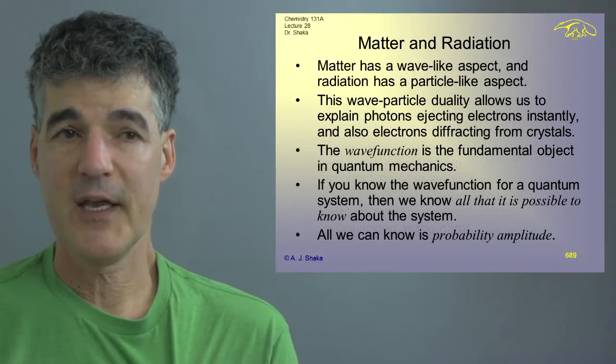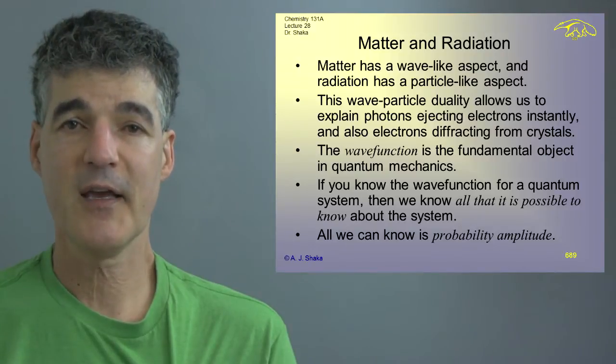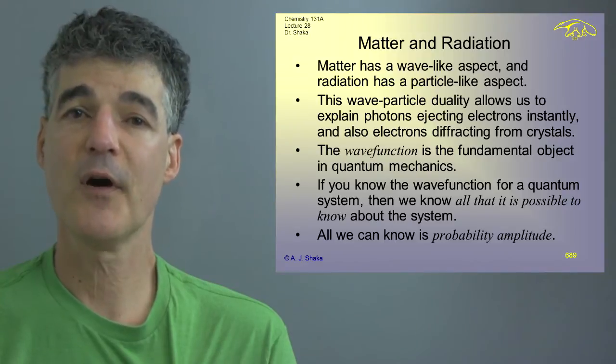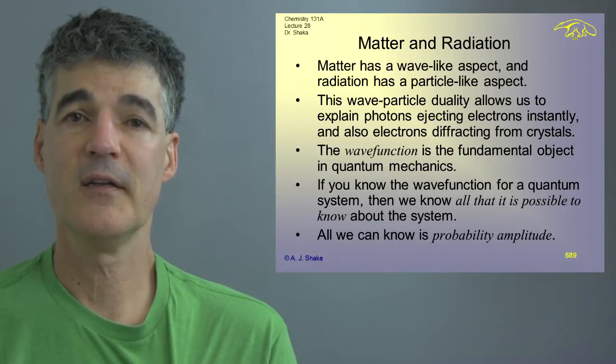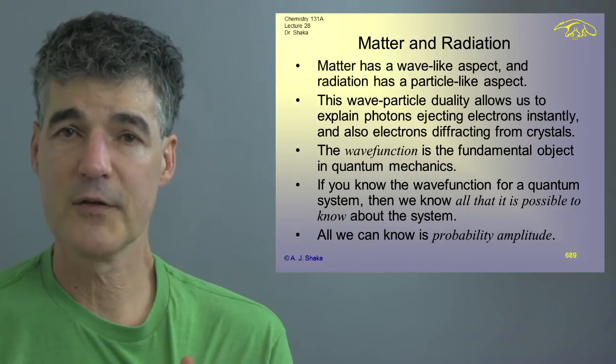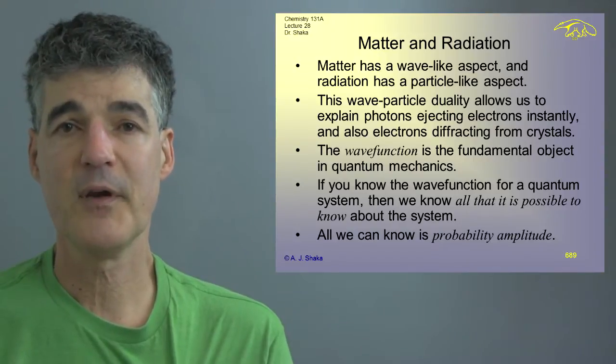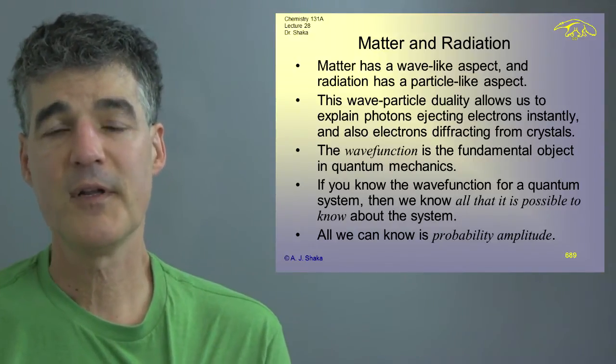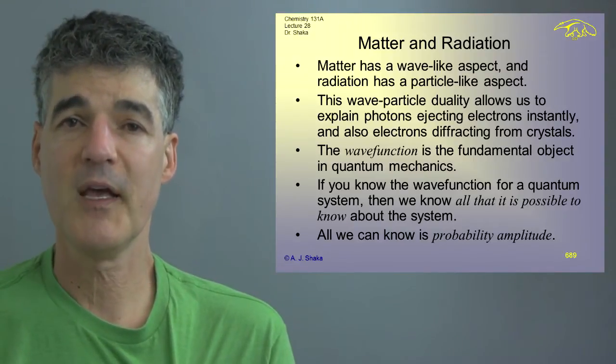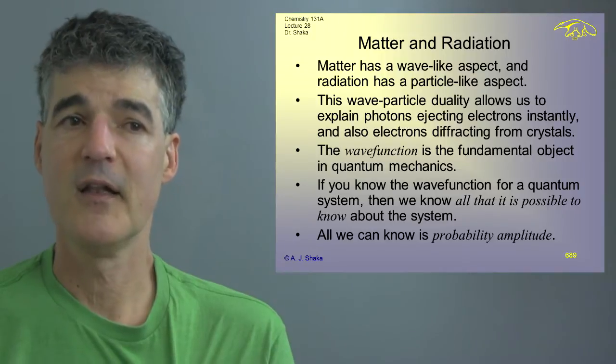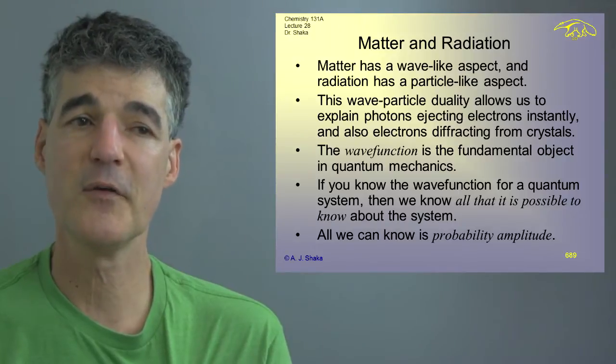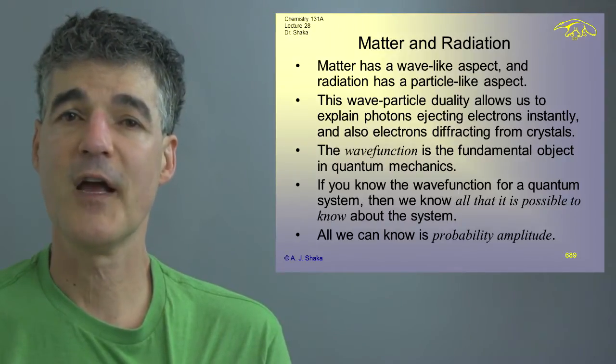We talked about matter and radiation. In particular, matter has a wave-like aspect quantified by the de Broglie wavelength and radiation has a particle aspect which we saw when we dealt with the photoelectric effect. This kind of wave-particle duality that in fact something can appear to have different properties depending on what you ask about the object allows us to explain all these experiments like photons ejecting electrons essentially instantaneously from a metal surface in a vacuum and electrons diffracting from crystals.